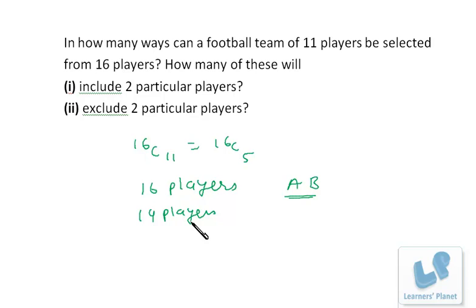Out of this 14 we just have to select nine players because two we have already selected. So 14 players are there and we have to select 9, so it's 14C9. So it's pretty clear.